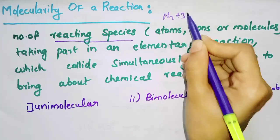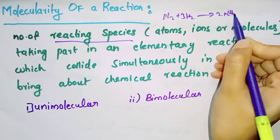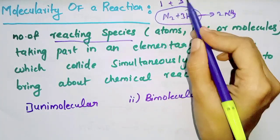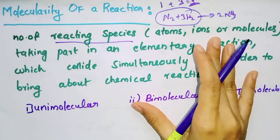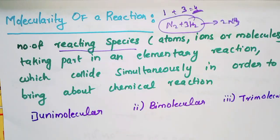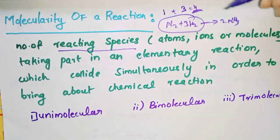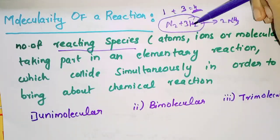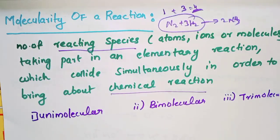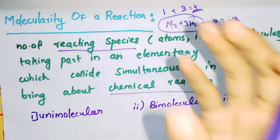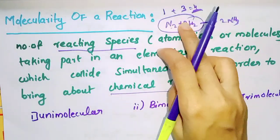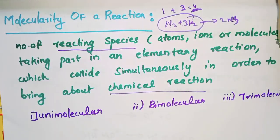We have N2 plus 3H2 gives 2NH3. The reactants are 1 mole of N2 plus 3 moles of H2, giving us 4 moles of reactants total. They react — that is the chemical reaction. N2 is 1 mole, H2 is 3 moles, and together 4 moles. That is molecularity of the reaction.